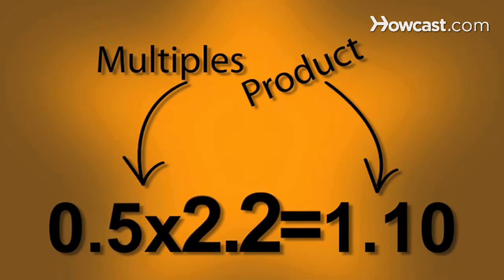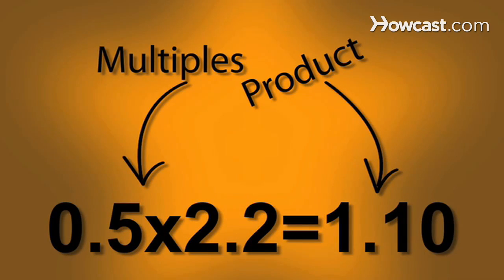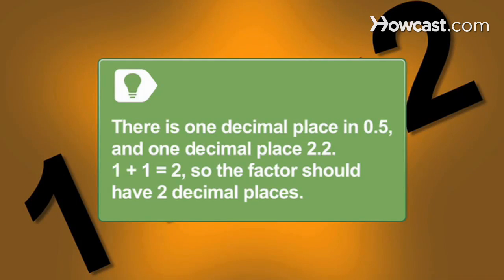First, add up the number of decimal places in the two multiples. For instance, there is one decimal place in 0.5 and one decimal place in 2.2. 1 plus 1 equals 2, so the answer should have two decimal places.